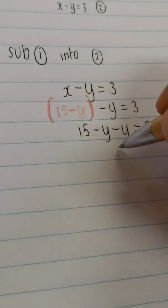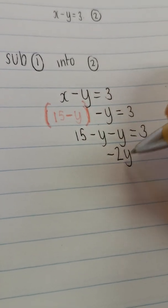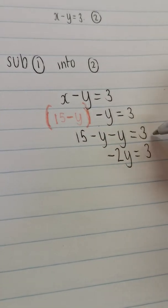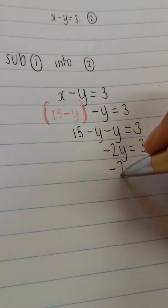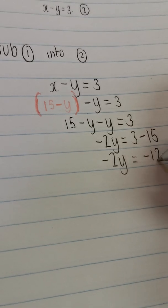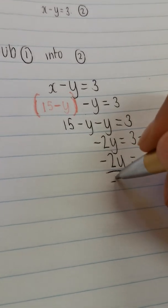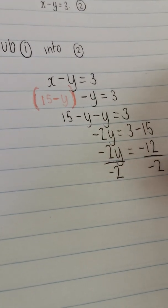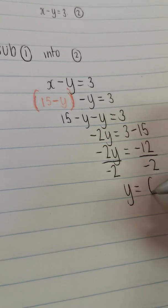This here gives me 15 minus y minus y equals 3. Minus y minus y gives me minus 2y equals 3. Take this over, negative 15. So, negative 2y equals 3 minus 15 is negative 12. Divide by the coefficient, divide by the coefficient, y is equal to positive 6.